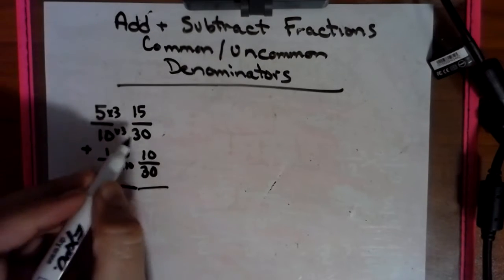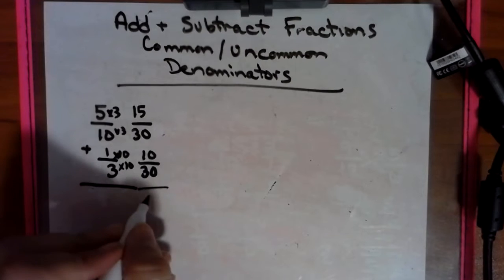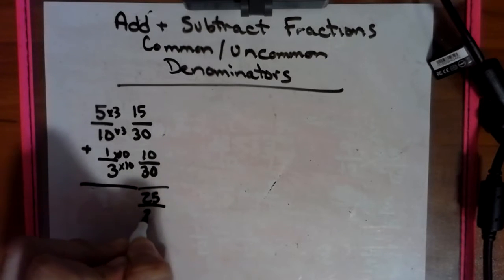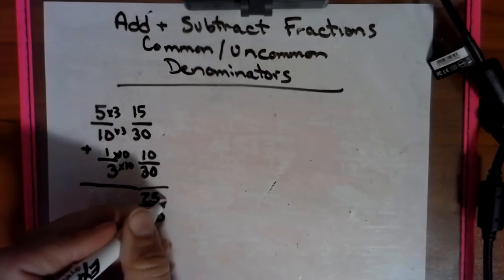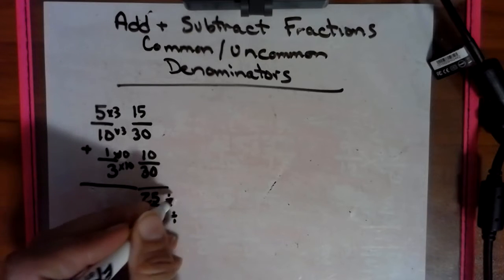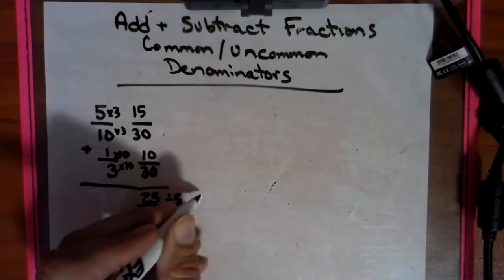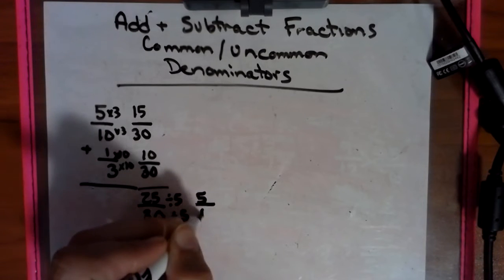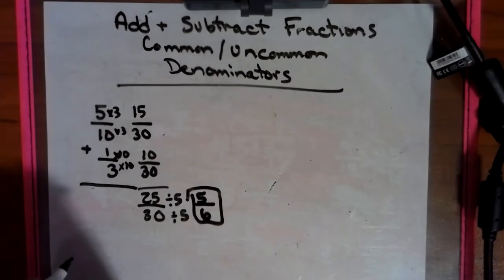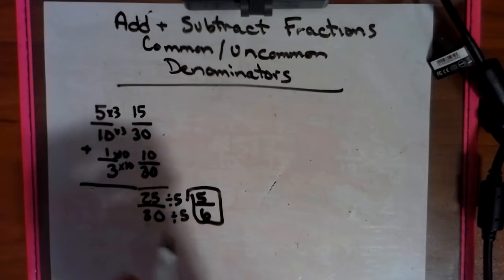So now we just add the numerator. So we have 15 plus 10 is 25 thirtieths. And we can reduce this. We can at least reduce it by 5 because we can count by 5s to get there. 5 goes into 25 five times. And 5 goes into 30 six times. So then our final reduced answer is 5 sixths.